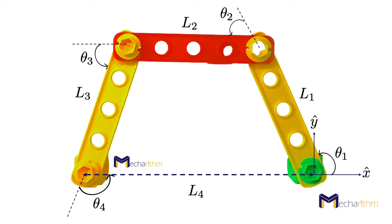Since it has only one degree of freedom, the configuration space or C-space has only one dimension. For a complete lesson on configuration space including topology, refer to our video on configuration space and the representation of the configuration space. It's quite difficult to represent the configuration space with only one parameter. A viable option is an implicit representation of the C-space, embedding the configuration space in a higher-dimensional Euclidean space subject to constraints. The best common approach for closed-loop mechanisms is to represent the C-space by the joint angles subject to loop closure constraints.